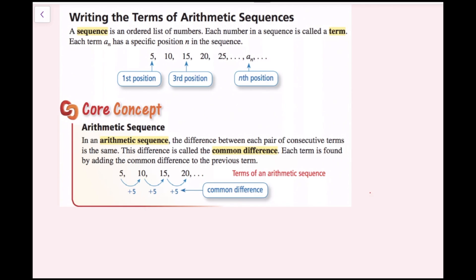So if we look right here, the first term is 5, then 10, then 15, then 20, then 25, and then this is the nth term, a sub n. In an arithmetic sequence, the difference between each pair of consecutive terms is the same. This difference is called the common difference. Each term is found by adding the common difference to the previous term. You can see here that we continue to add 5 — 5 would be the common difference — and we're adding 5 each time to get to the next term.